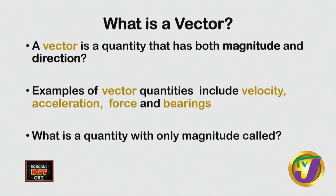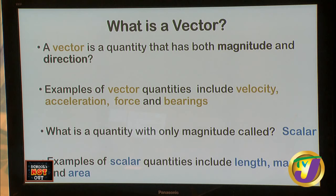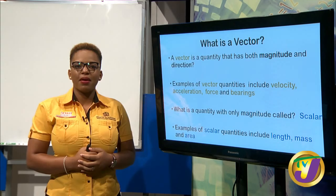What is a quantity with only magnitude called? Since a vector has both magnitude and direction, a quantity with only magnitude is a scalar. Examples of scalar quantities include length, mass, and area.